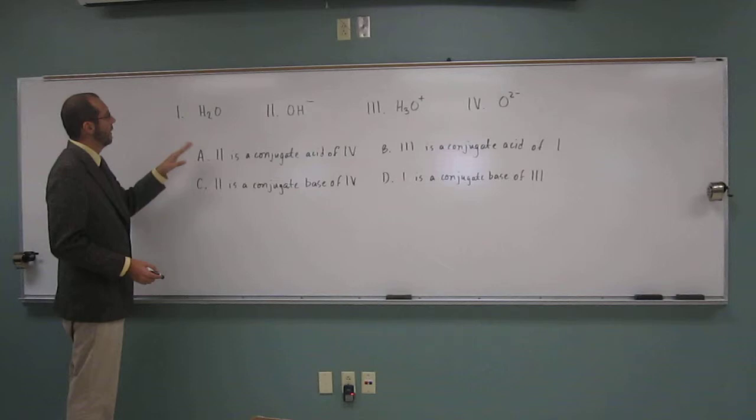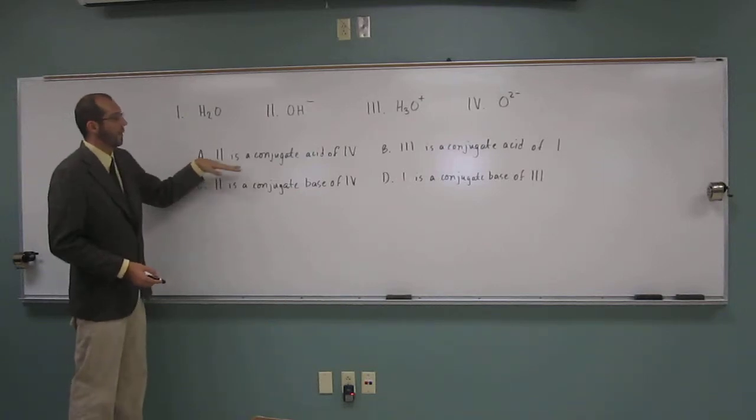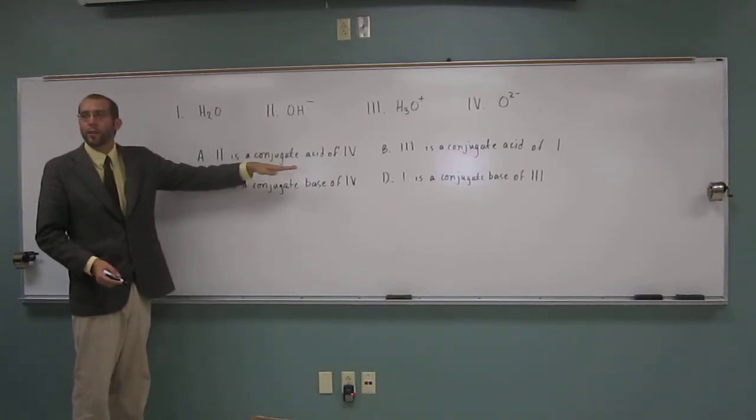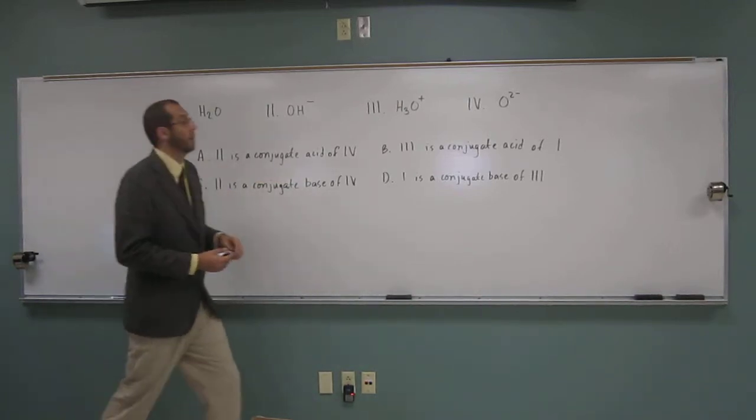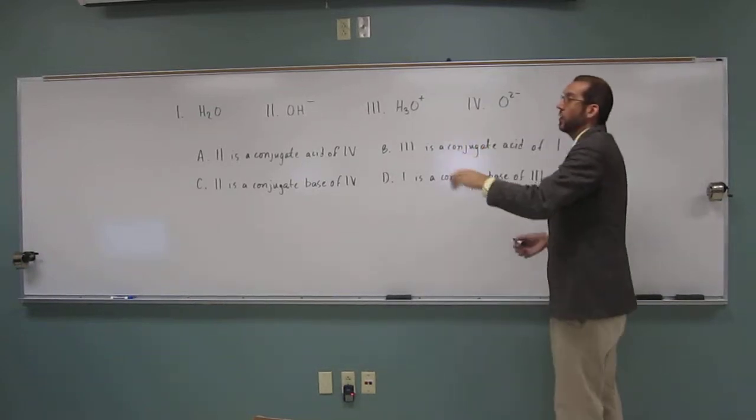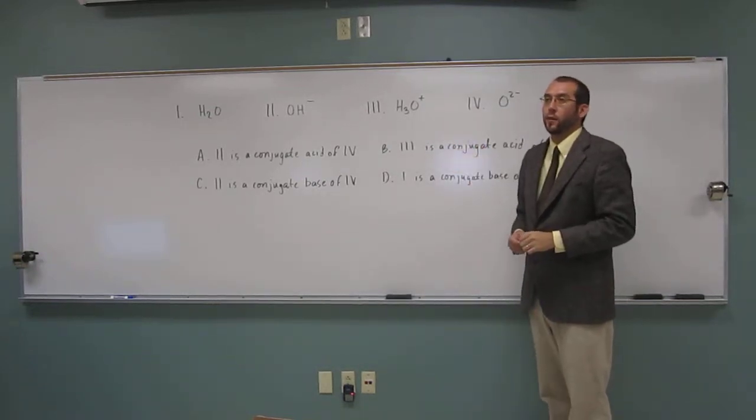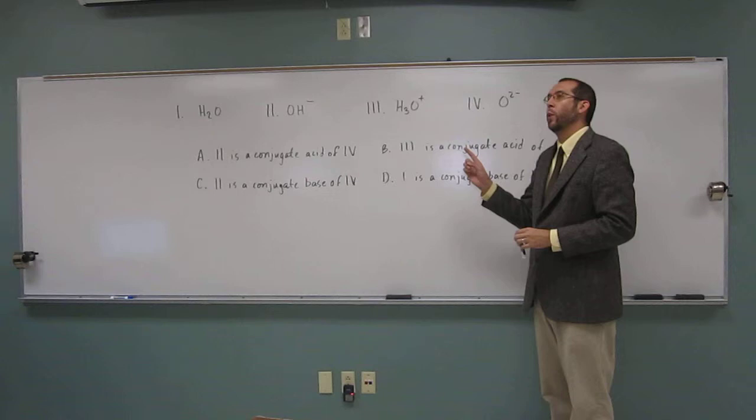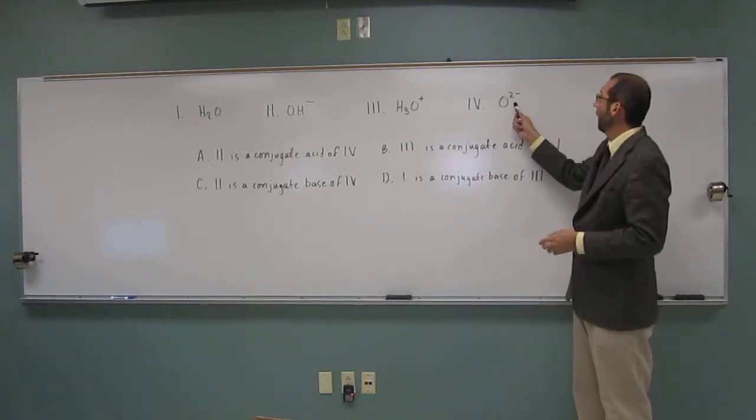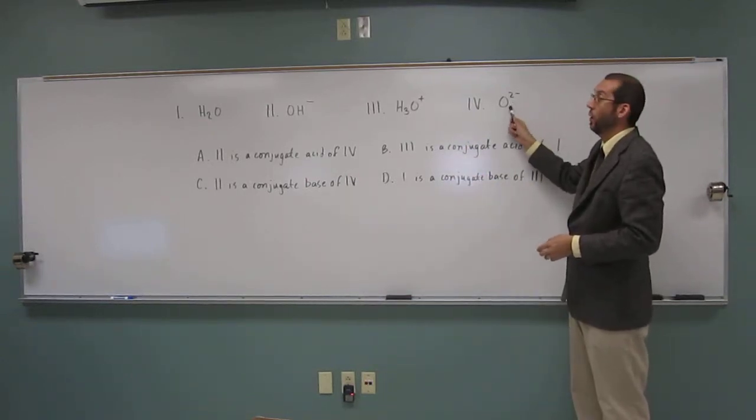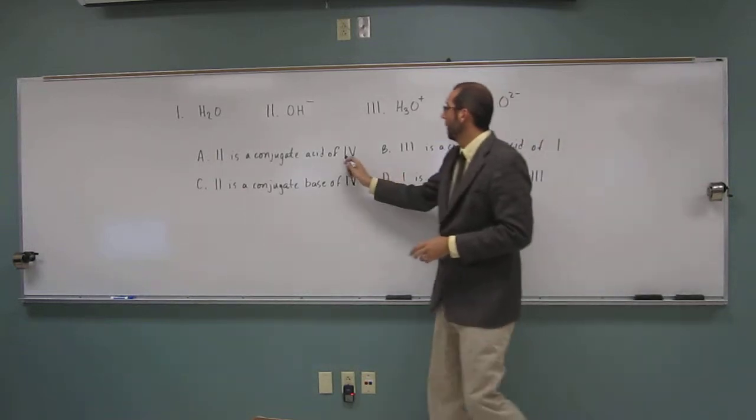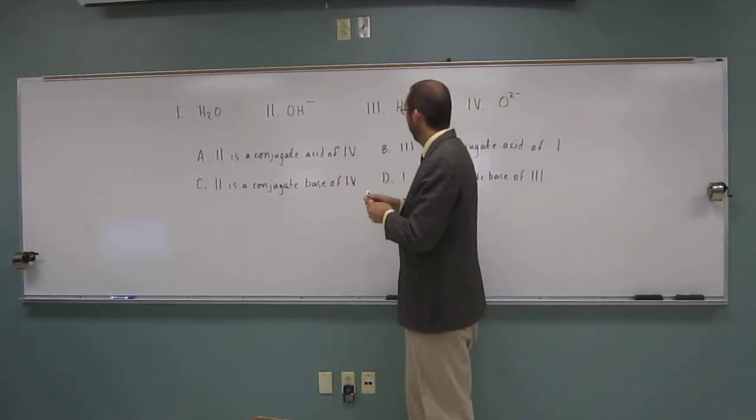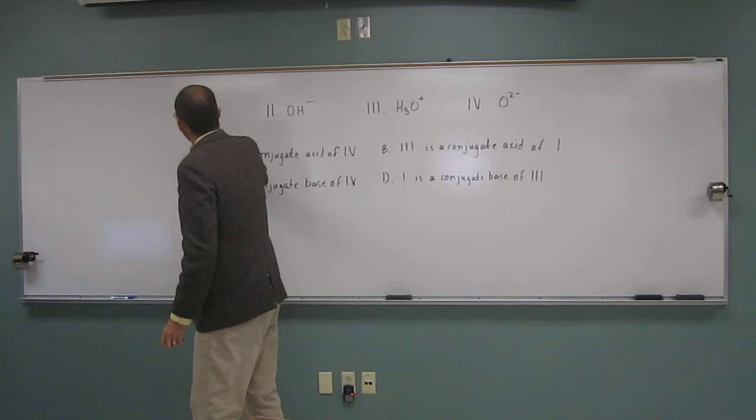So A says 2 is a conjugate acid of 4. Is that correct or incorrect? Correct. It's correct. Why is that? Because when we look at a base to find its conjugate acid, what do we add to it? H plus. So when we add H to this, we get OH and we add a plus to it, we get minus 1. Does that make sense? Yes. So this is correct. Okay, so let's put a little check.